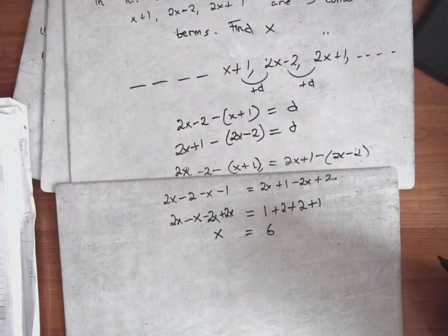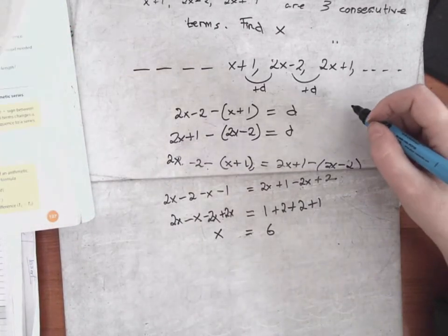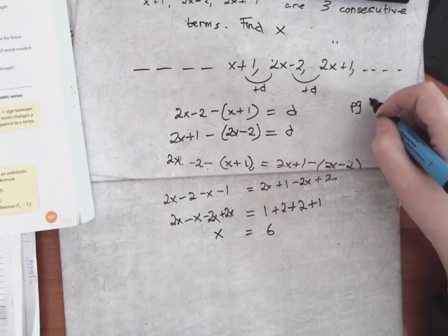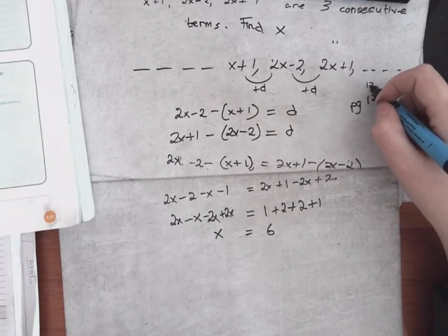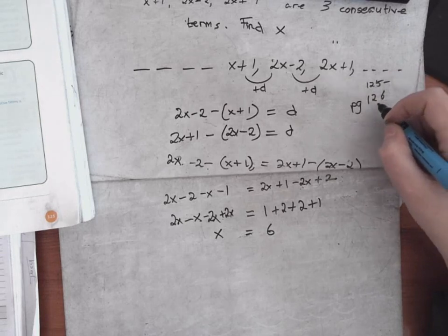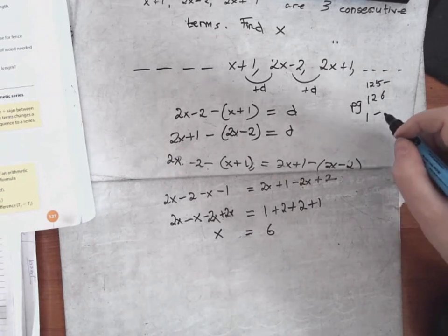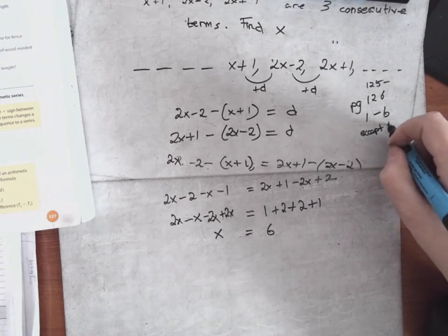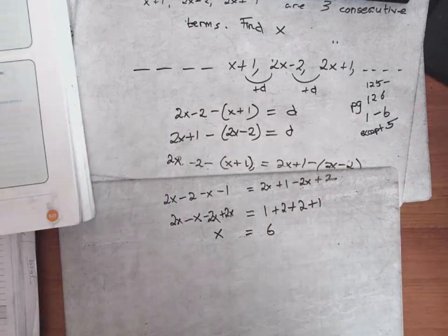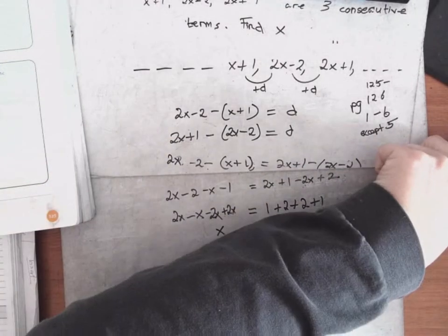I'll leave you with that — I won't give you one of those for homework because I don't think you're ready to try one yourselves yet. I'll do another couple tomorrow. Based on examples 1 and 2, for homework do page 125 to 126, questions 1 to 6 except number 5, since I did that as one of my examples. Is that alright? Okay, you can head off now — thank you, bye.